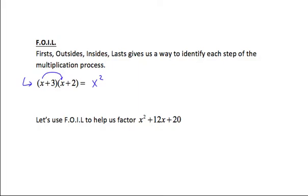Continuing the distributive property: x times 2 — notice we're looking at the Outsides, the outside edges of my two binomials — gives us positive 2x. Then 3 times x, that's my Insides, the inside terms of my two binomials, gives me positive 3x. And finally, the last step is positive 3 times positive 2 — that's the Lasts — so 3 times 2 gives us positive 6.